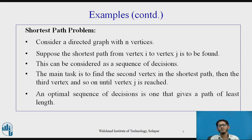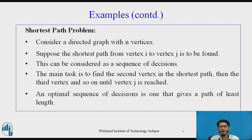The next example is the shortest path problem. Consider a directed graph with n vertices. Finding the shortest path from vertex i to vertex j is treated as a sequence of decisions: first find the second vertex in the shortest path, then the third, and so on, until we reach vertex j. An optimal sequence of decisions gives a path of least length.